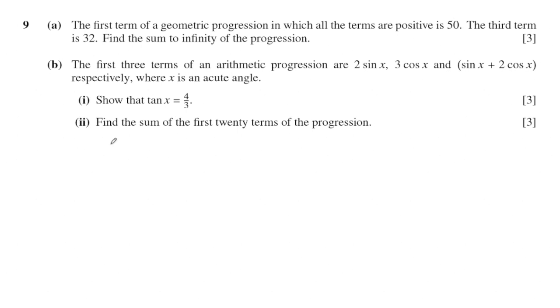The first term of this one will be equal to 50, and here is a geometric sequence. So you can have u₂ and u₃ will be equal to 32. u₂ will be equal to u₁ times the ratio power to 1, and here is r power to 2.